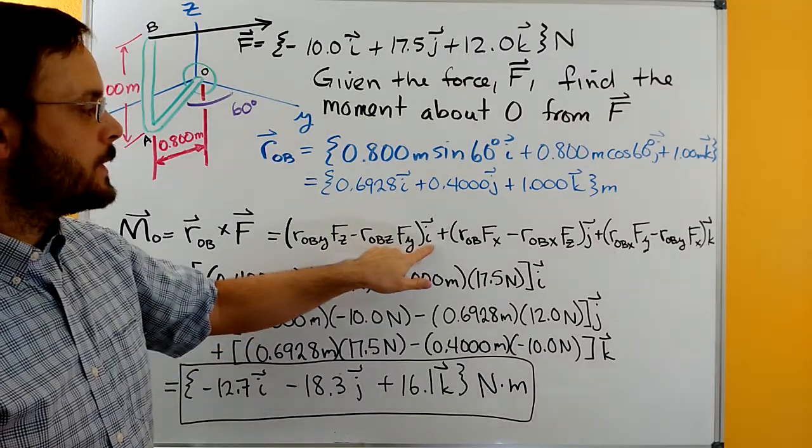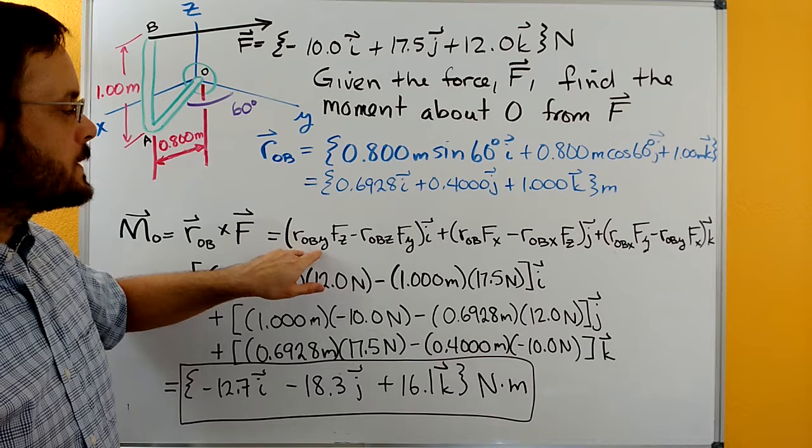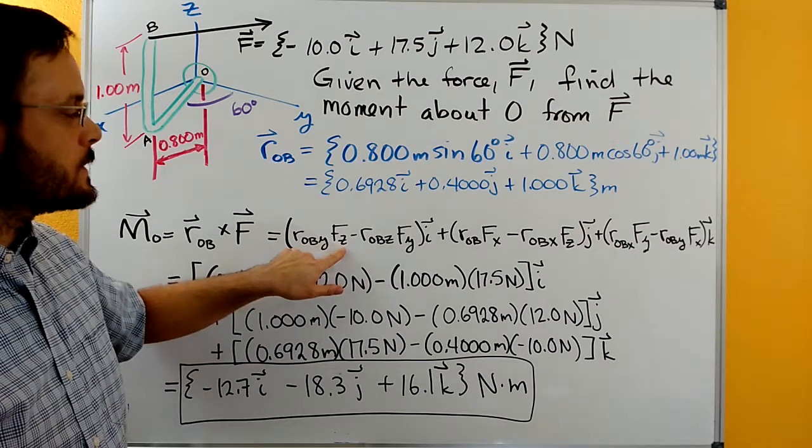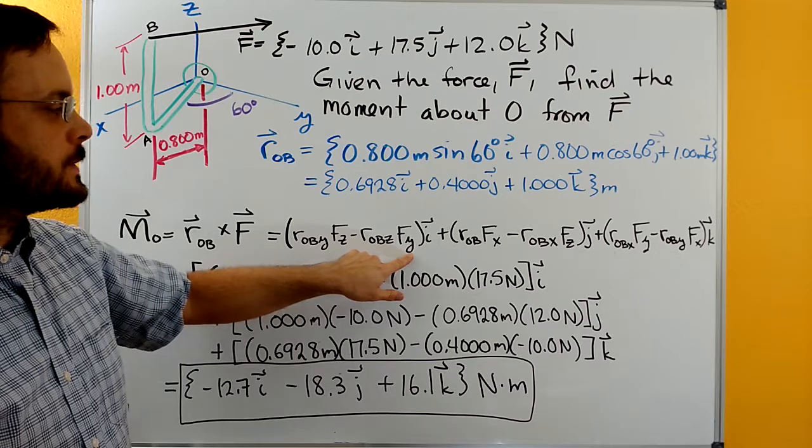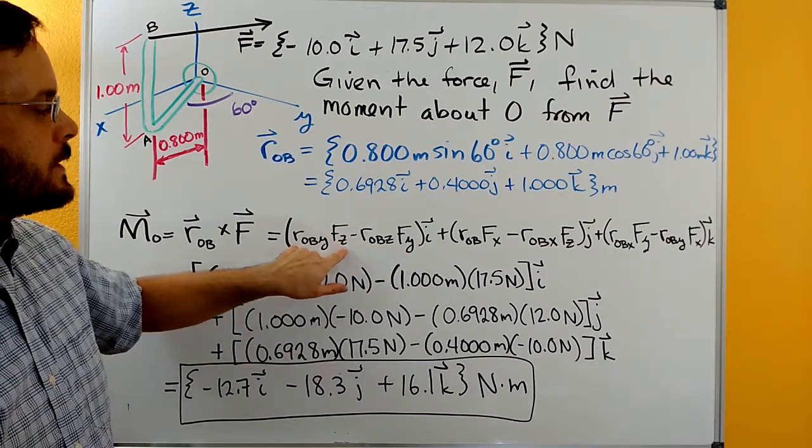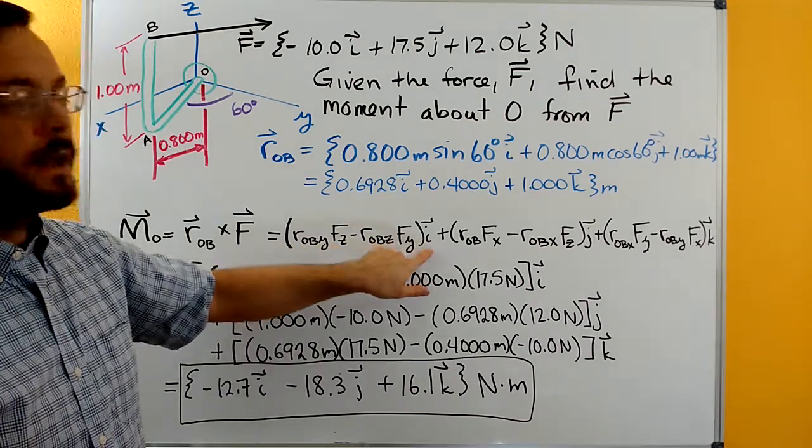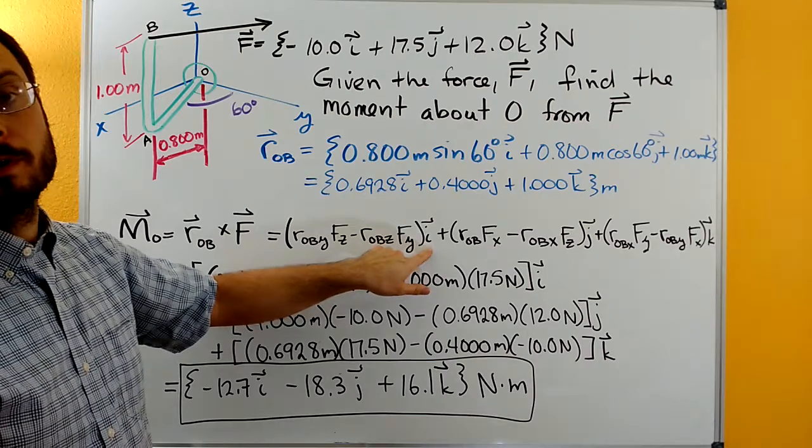So the I component is going to have Y position vector times Z force, a Z position vector times Y force. You'll notice that you have Y and Z here, Z and Y here, and then you wind up with a moment about the X axis.